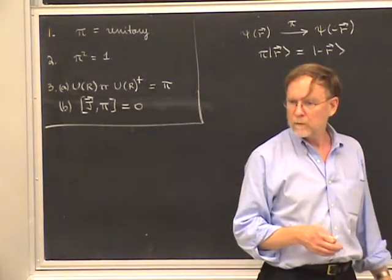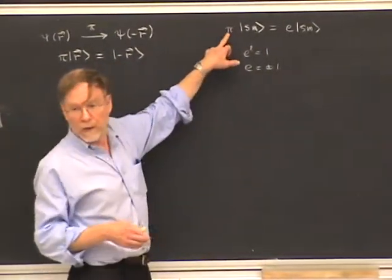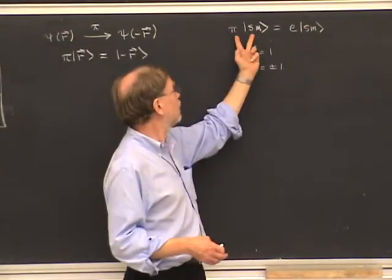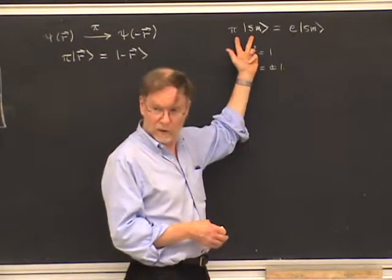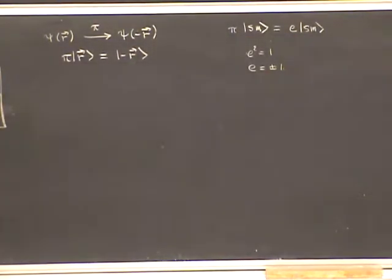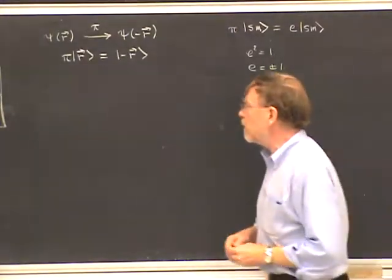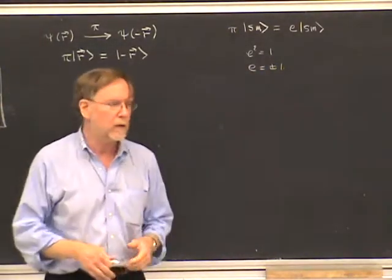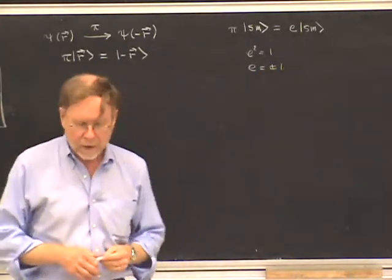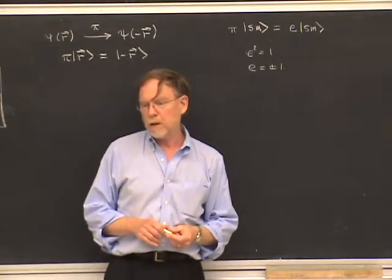There's a question about whether these postulates or experimental data allow us to decide whether eta is plus one or minus one. In non-relativistic quantum mechanics, the answer is no, because the number of particles is conserved. Whether you assign positive or negative intrinsic parity to some particles doesn't affect the balance of parity in any reaction, since particle numbers don't change. So it's a purely arbitrary choice as long as particles are neither created nor destroyed.